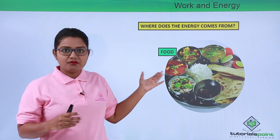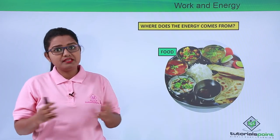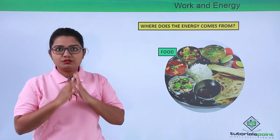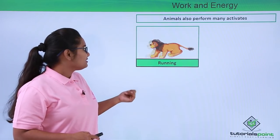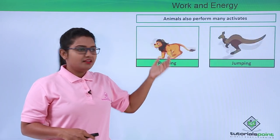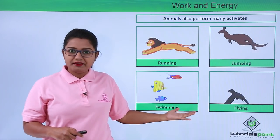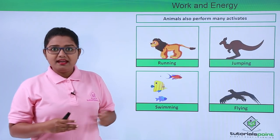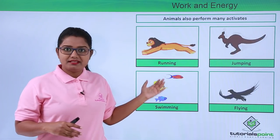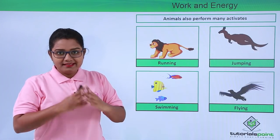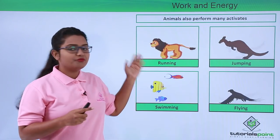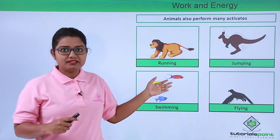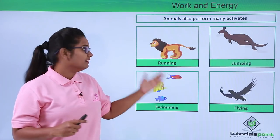Not only we human beings, but animals also perform a lot of activities throughout the day. For example, animals perform activities like running, jumping, swimming, and flying. Apart from this, they perform other activities like chasing their prey to feed themselves, and those activities are all strenuous — they consume a lot of energy. Animals also get energy to perform such activities from the food that they eat.